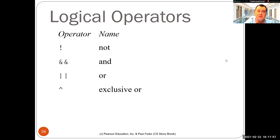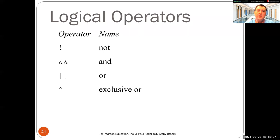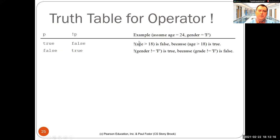Similarly for disjunction, exclusive OR is true if one operand is true and the other one is false — it is the negation of equivalence. It's not the case that they both have the same truth value. Let's go over examples of each one of them.